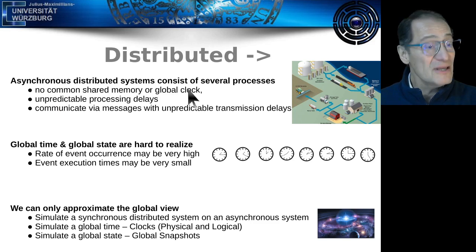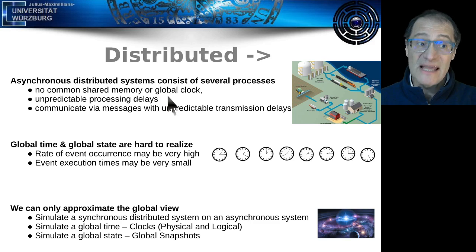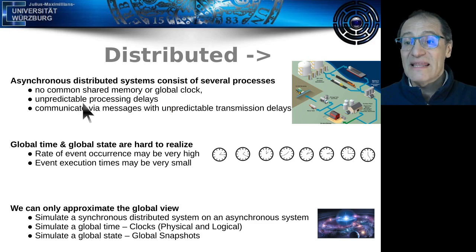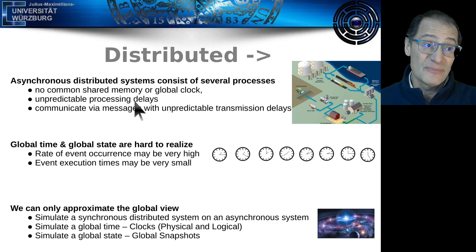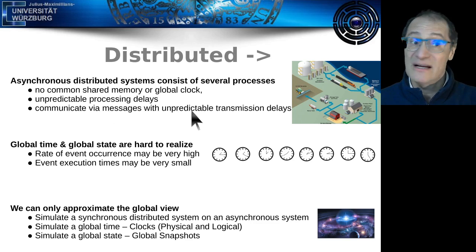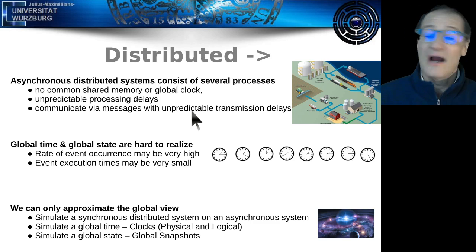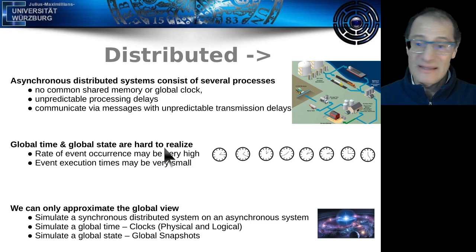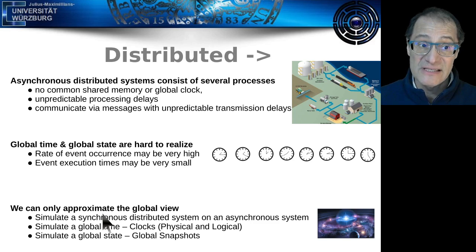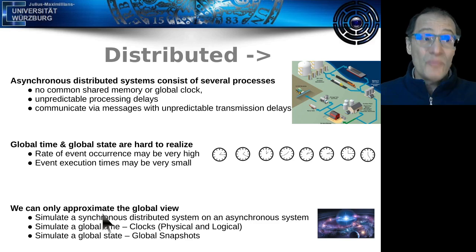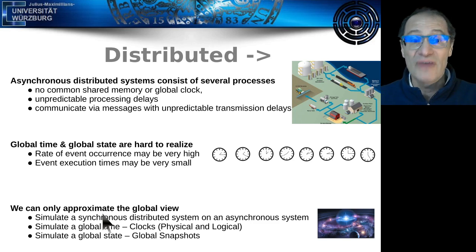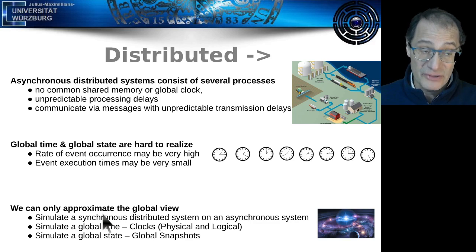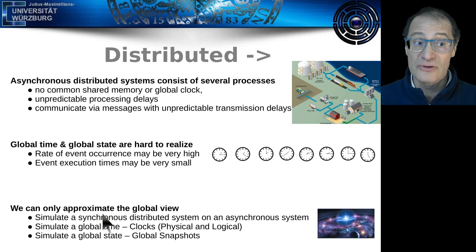We have no common shared memory and no global clock. The state of the system is distributed across all memories of all nodes. Process delays are unpredictable — we don't know exactly how long a process will take, and exactly the same with communication: delays are not deterministic. We cannot know for sure how long communication will take. The global time and global state are really difficult to realize. We can have only an approximation of the global state of the system.